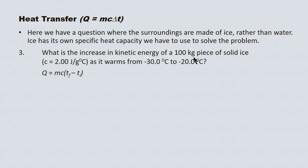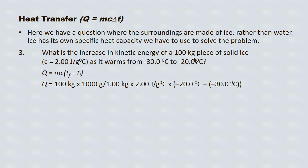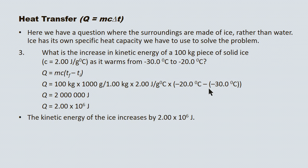Nevertheless, we start in the same manner. Here's our equation. We substitute in — starting with the mass of 100 kilograms, then a conversion factor: 1 kilogram equals 1,000 grams, getting us out of kilograms and into grams. Multiply by our specific heat capacity and our change in temperature. Our raw value is 2,000,000 joules required to increase the kinetic energy of this ice. Applying significant digits, our final answer is 2.00 × 10⁶ joules. The kinetic energy of the ice increases by 2.00 × 10⁶ joules.